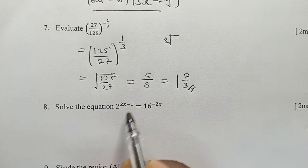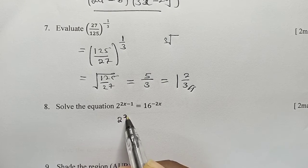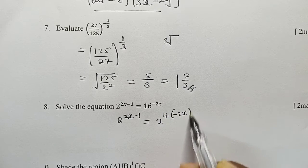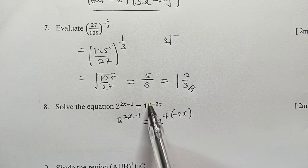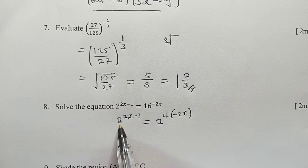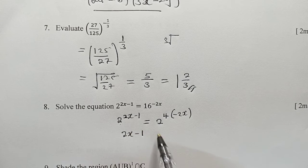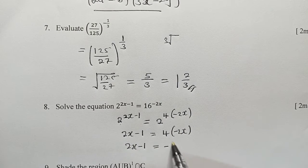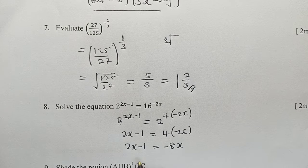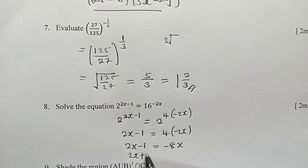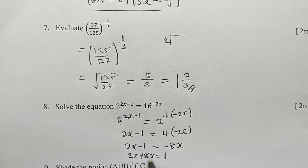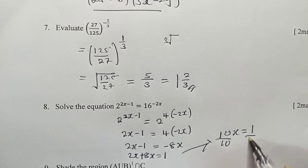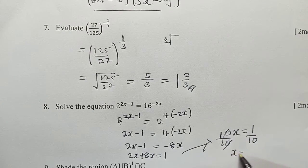Here we need to balance the bases. We have 2 to the power (2x minus 1) equals 2 to the power 4, since 16 equals 2 to the power 4. Once the bases are the same, we get the powers: 2x minus 1 equals 4. Expanding gives 2x plus 8x equals 1, so 10x equals 1, divide by 10, and x equals 1 over 10.